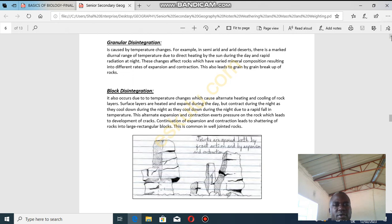It's caused by temperature changes, for example, in semi-arid or arid deserts. There is a marked dual range of temperature due to direct heating by the sun during the day and rapid radiation at night.